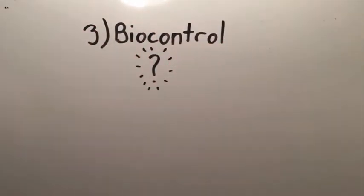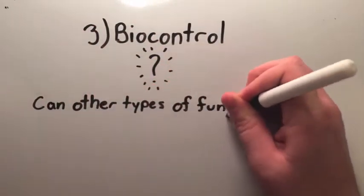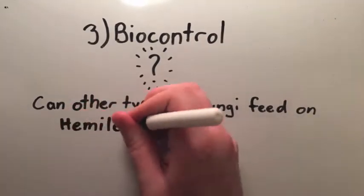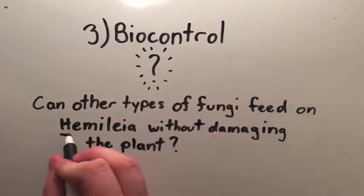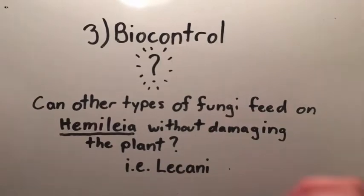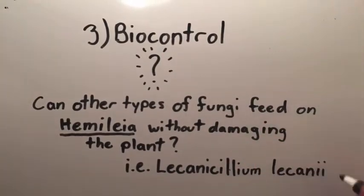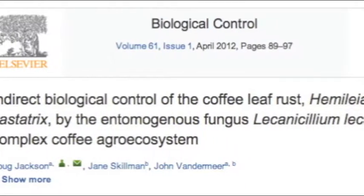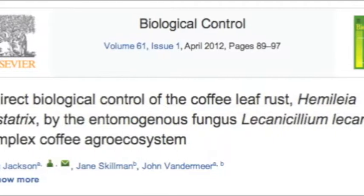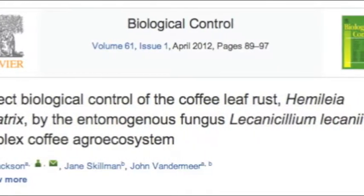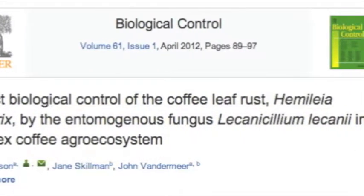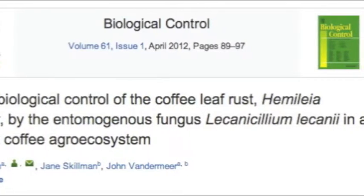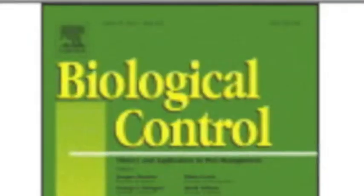Recently, research has focused on finding biocontrol measures that could manage coffee leaf rust, and the most promising is the mycoparasitic fungus Lecanicillium lecanii. A study published in the journal Biological Control found that this fungus could control the disease without causing major damage to the coffee plant, although there was a year-long lag between when infection by Hemileia vastatrix occurred and suppression by Lecanicillium lecanii.